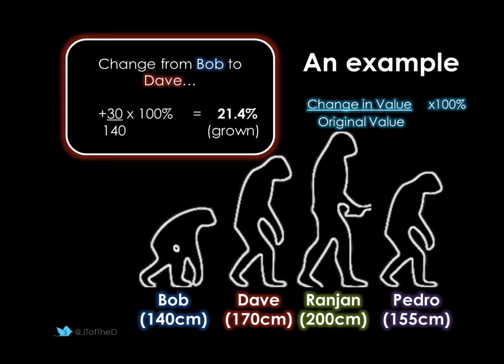So from Bob to Dave — the first couple of steps of evolution. Bob was 140 cm, Dave was 170, so the change between Bob and Dave is plus 30. Divide by the original figure, which was Bob at 140, multiply by 100 — that's a 21.4% growth. So from Bob to Dave, evolution meant the man was 21.4% taller.